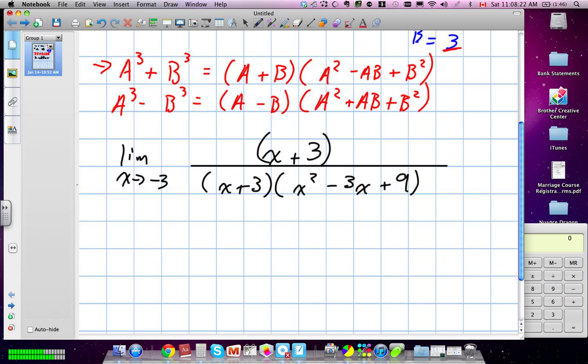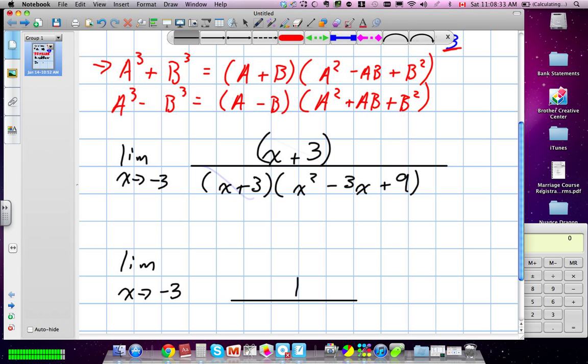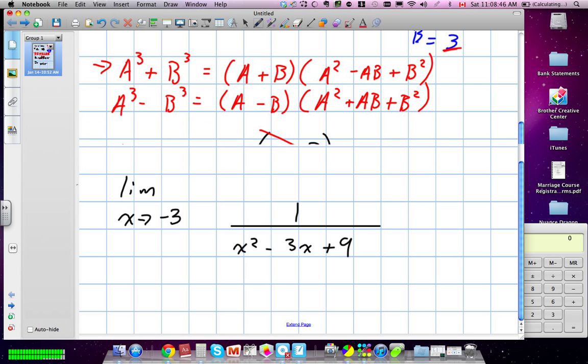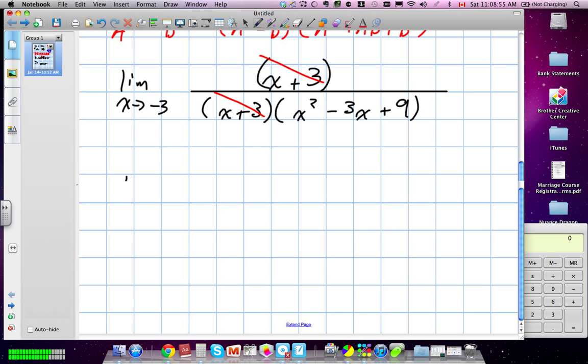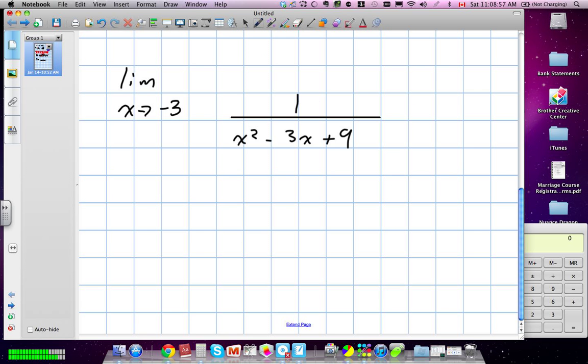We know that both of those are going to cancel out. So we have the limit of x as it approaches negative 3 is equal to 1 divided by, and then we take our, because these two cancel each other out, we're only left with the second bracket underneath. So we have x squared minus 3x plus 9. Now, we can look into this. We may be able to factor this. This is a quadratic. We may even go farther and factor this in this form.